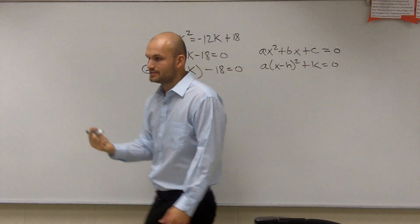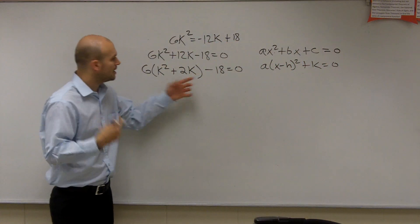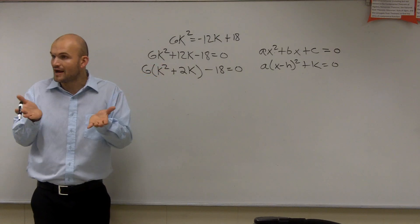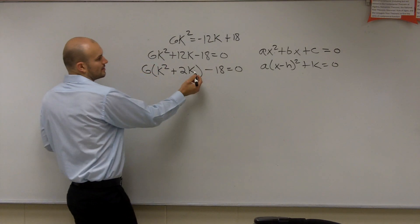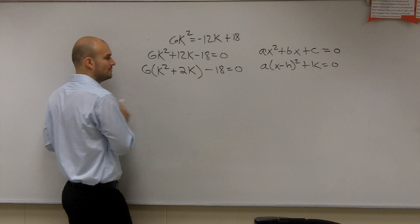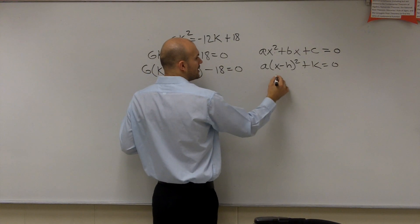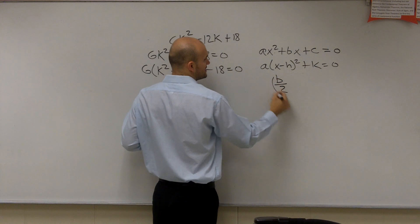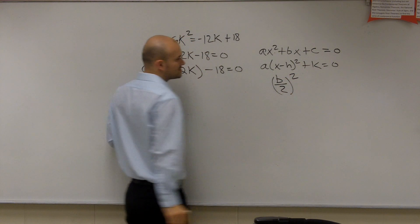And remember, just like you guys did your factoring practice, what we're going to do is we're going to want to get a trinomial and factor it down to two binomials. So to make this a perfect square binomial, what I mean, or trinomial, I'm going to take b divided by 2 and square it.